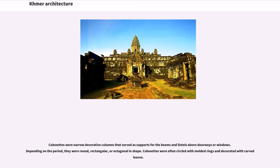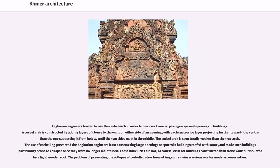Colonnets were narrow decorative columns that served as supports for beams and lintels above doorways or windows. Depending on the period, they were round, rectangular, or octagonal in shape, and were often circled with molded rings and decorated with carved leaves. Angkorian engineers tended to use the corbel arch to construct rooms, passageways, and openings in buildings. A corbel arch is constructed by adding layers of stones to the walls on either side of an opening, with each successive layer projecting further towards the center than the one supporting it from below, until the two sides meet in the middle.